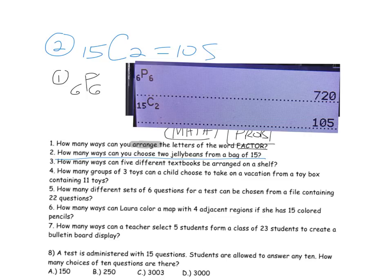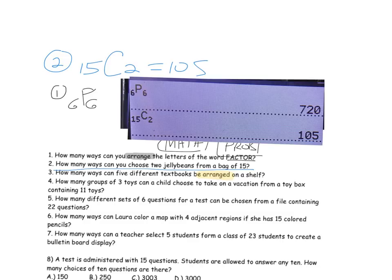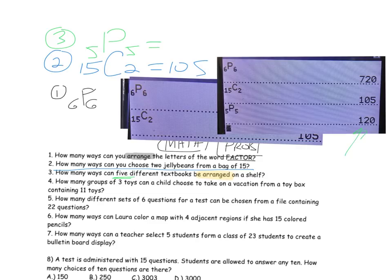Problem three: how many ways can five different textbooks be arranged on a shelf? The key word is arranged — arrangements mean to put things in order. So this is a permutation of five books with all five books in order: 5P5, or 120 ways.